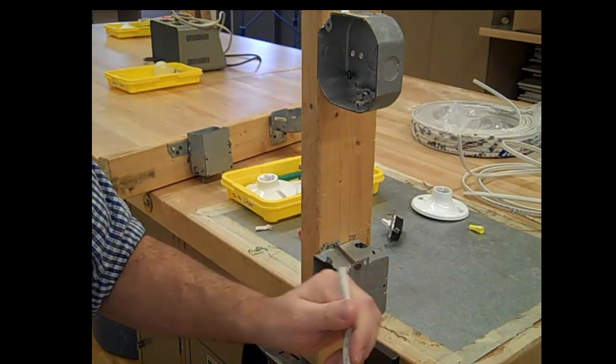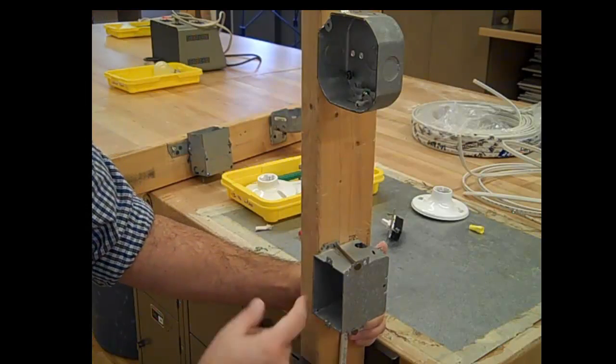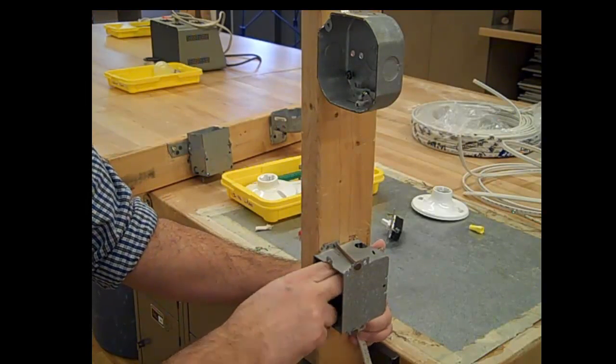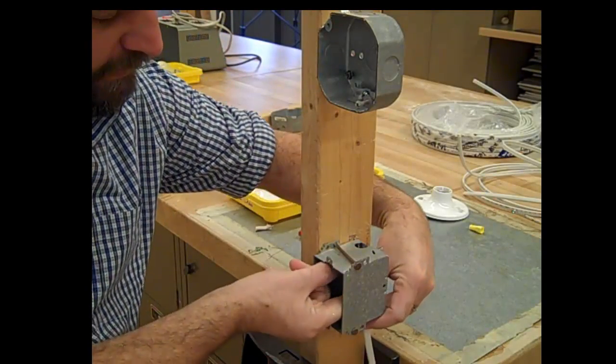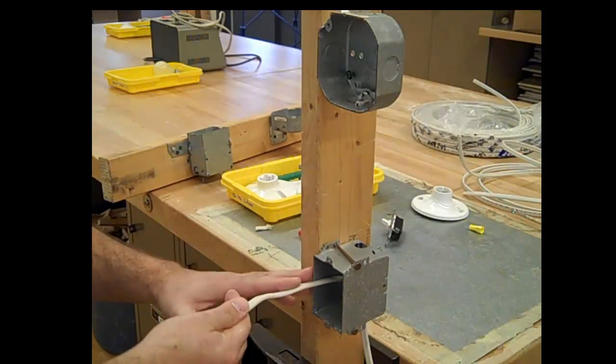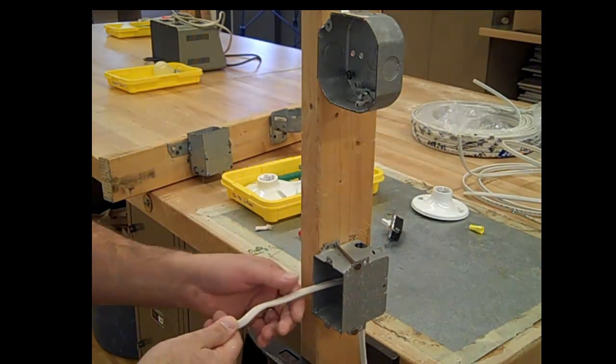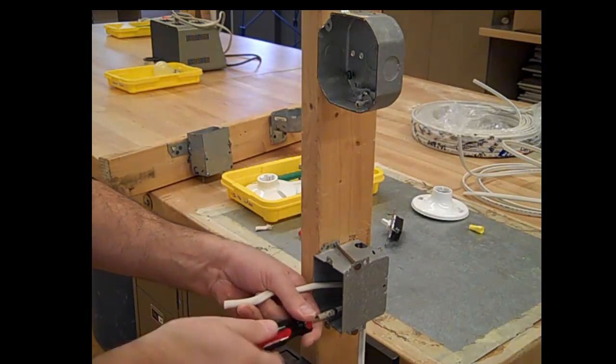I'm going to take the end of the wire, flatten it out, run it up through the hole so the end of the wire is in the box, and then pull it out towards myself. You want this to come out about six inches or so. Grab a Phillips screwdriver and tighten that screw in the back. That's going to clamp the wire to the box.